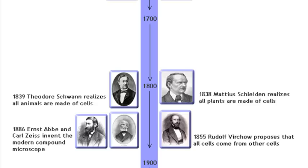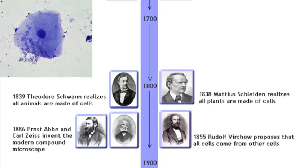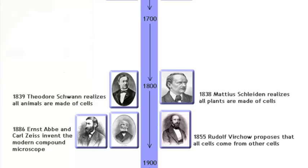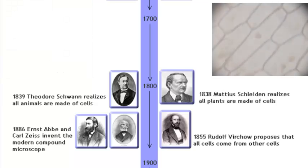Next comes the understanding that all living things are made of cells. Schwann saw this in animal cells and about the same time, Schleiden saw this in plant cells.